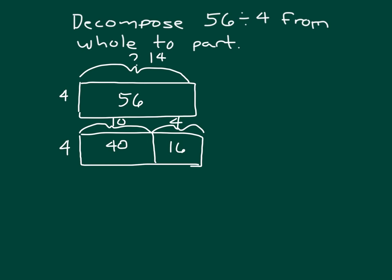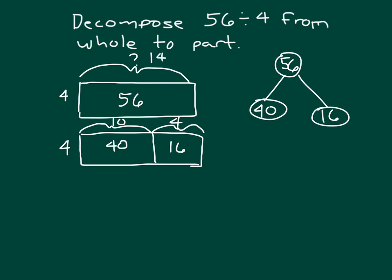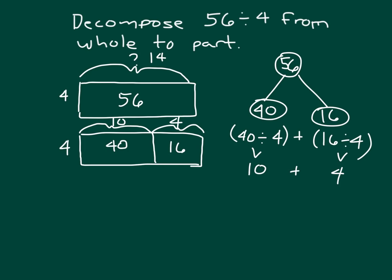Let's think about this again. We took 56 and we decomposed it and broke it apart into 40 and 16. When we're looking at 40 and 16, what were we dividing by? Because we're dividing 56 by 4, so we're also dividing 40 by 4 and 16 by 4. When we divide 40 by 4, we get 10. And when we divide 16 by 4, we get 4. And remember, we're adding those together — 10 and 4 does give us 14.